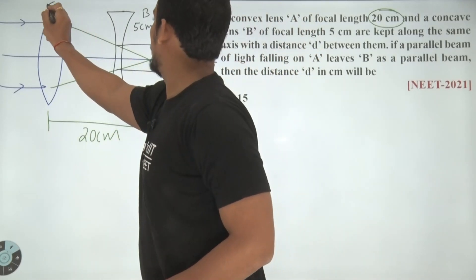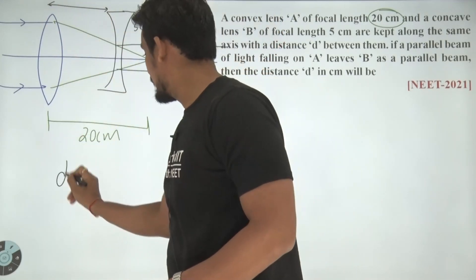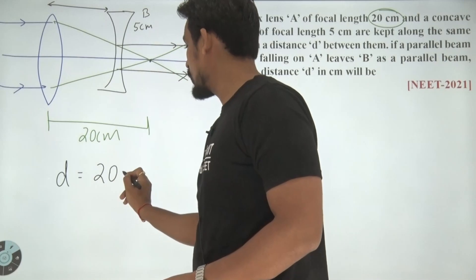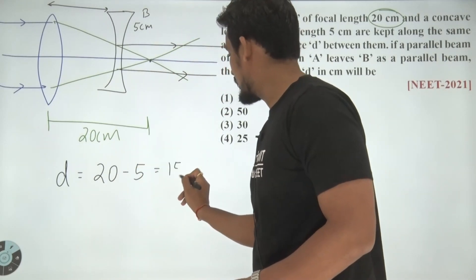This is 20 centimeter, so this distance would be 20 minus 5, and this value of D would come out to be 20 minus 5 equal to 15 centimeter.